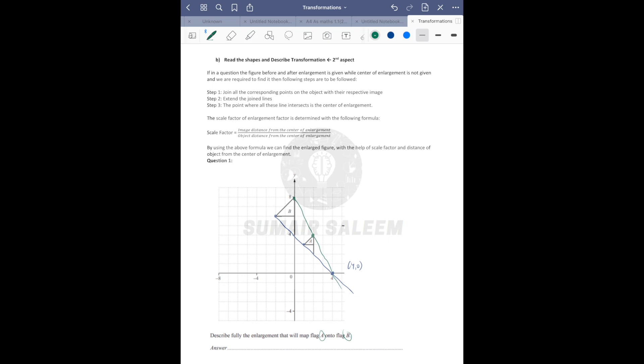Now you need to find scale factor. Scale factor is image upon object. This is 2, this is 1. Image upon object is going to be 2 upon 1, that's your scale factor.